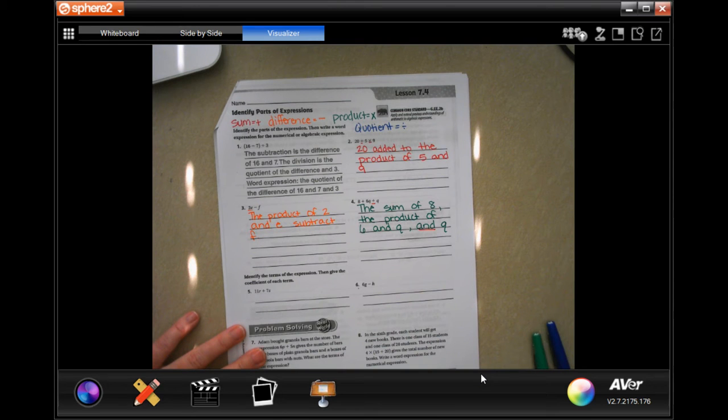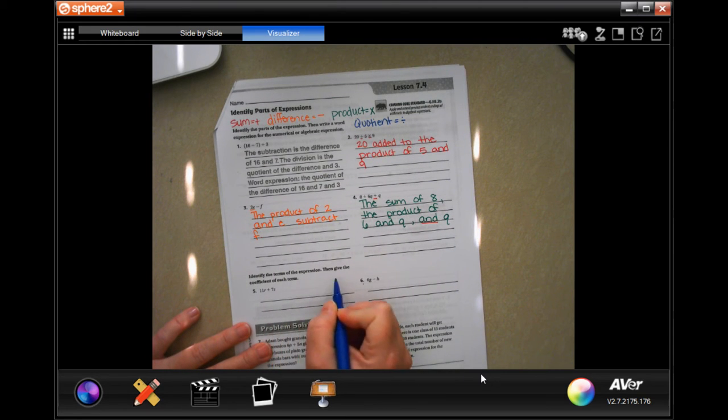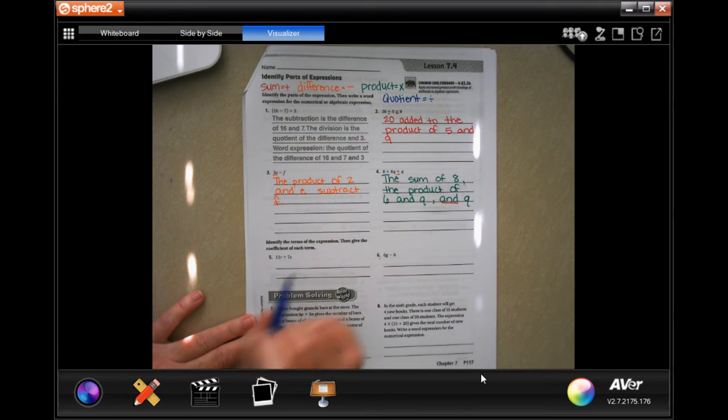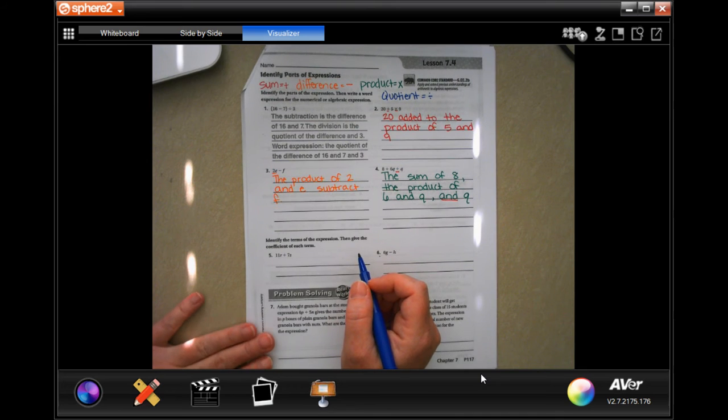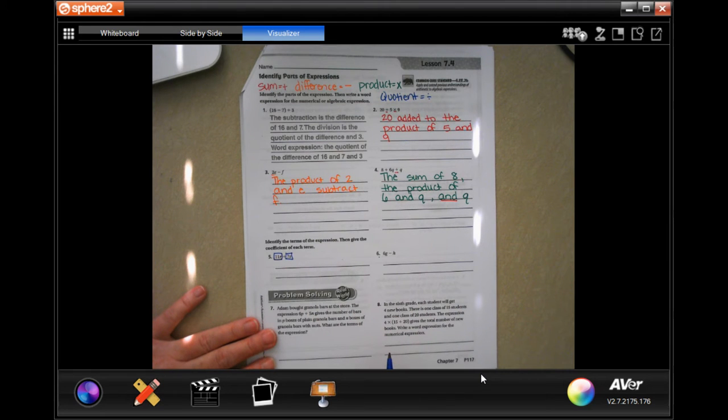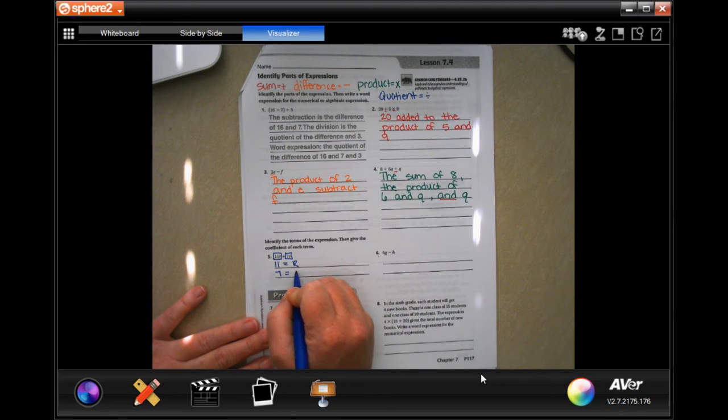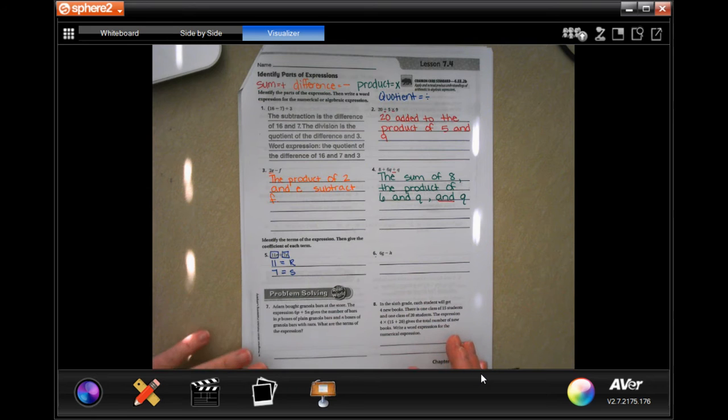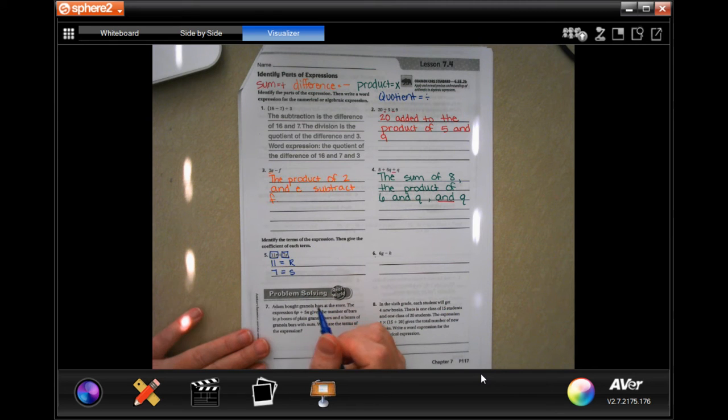Identify the terms of the expression and then give the coefficient of each term. The coefficient is just the number that's next to the letter, just the number assigned to that letter. So the terms are 11r and 7s. The coefficient of r is 11 and the coefficient of s is 7. The number is the coefficient.